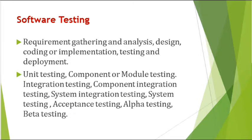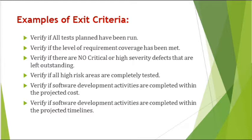Exit criteria will be covered in the test plan document. Since each testing level has different test criteria, the exit criteria will be different for each type — for example, alpha and beta testing will have different exit criteria, and unit testing and component testing will also have their own. Some examples of exit criteria include: checking whether all test plans have been completed, whether requirement coverage has been met, whether high severity bugs have been closed, or whether software development activities are completed within the project timelines. High risk areas associated with the project should also be completely tested.